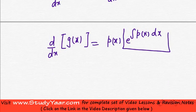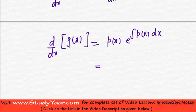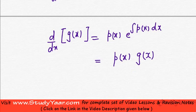But my g(x) is e raised to power integral p(x) dx. So I can replace this by g(x). So this is p(x) g(x). Let us call this as equation number 1.